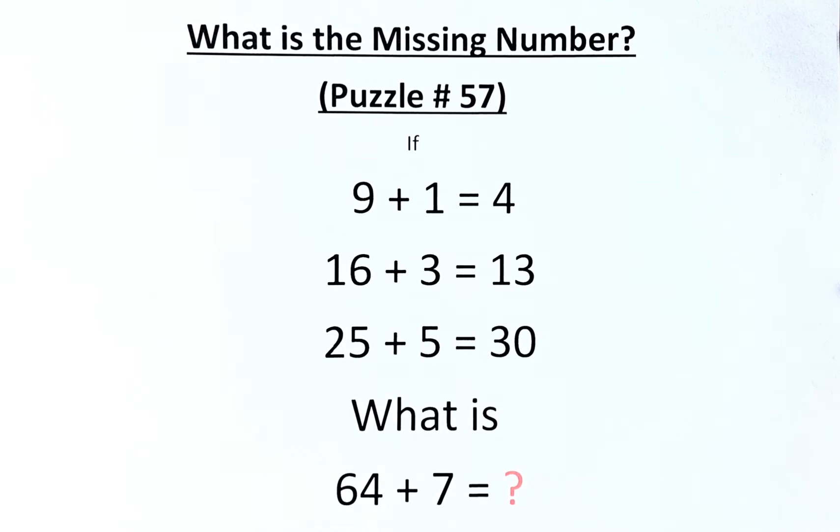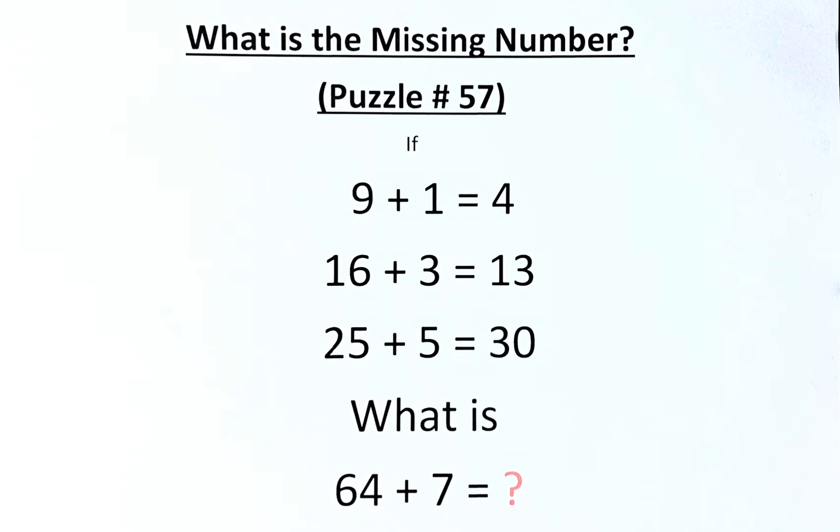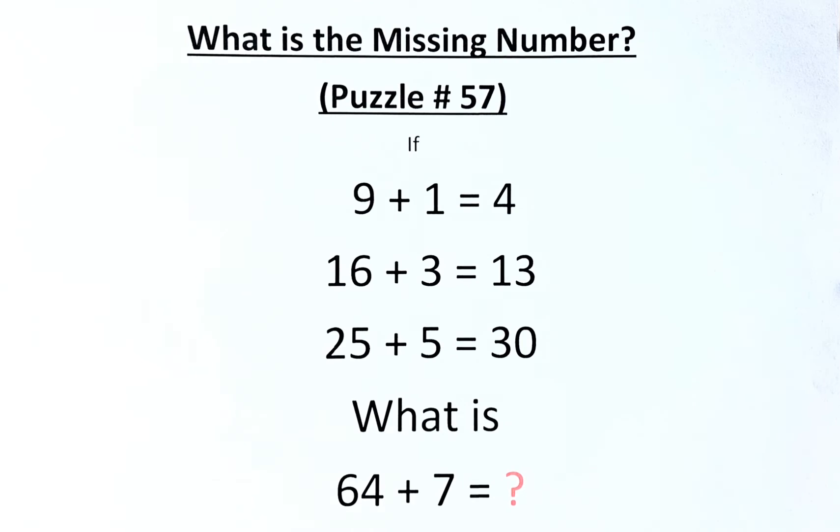If 9 plus 1 equals 4, 16 plus 3 equals 13, 25 plus 5 equals 30, what then is 64 plus 7 equals?